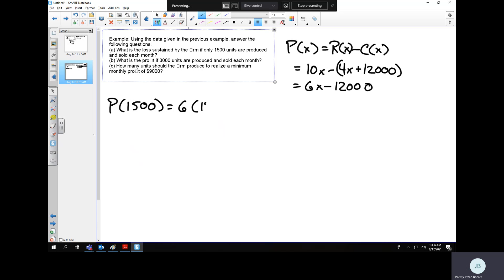Which is 6 times 1,500, not 15,000, minus 12,000. This is A. And that's 9,000 minus 12,000, is negative 3000. So if they only make 1500 units, they lose $3,000 per month.